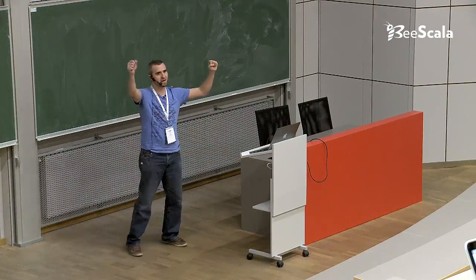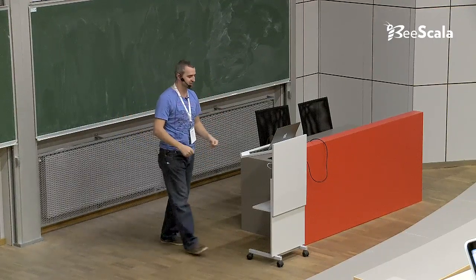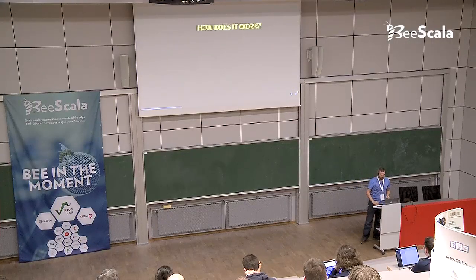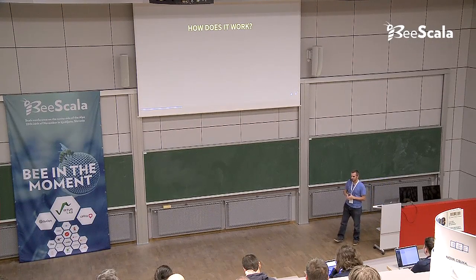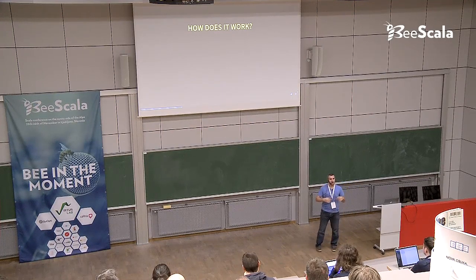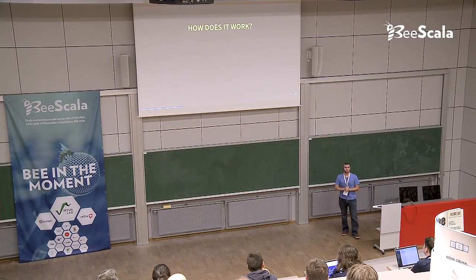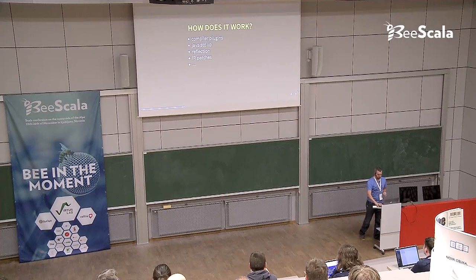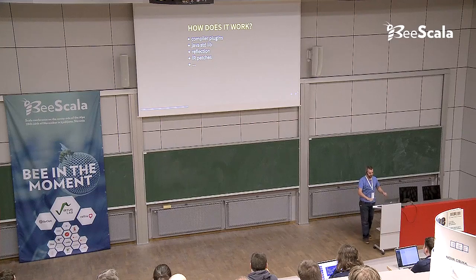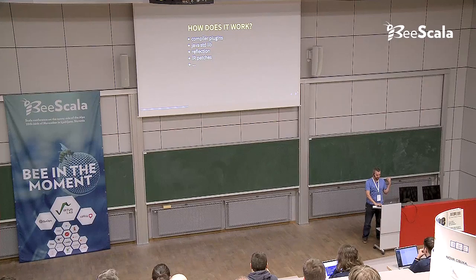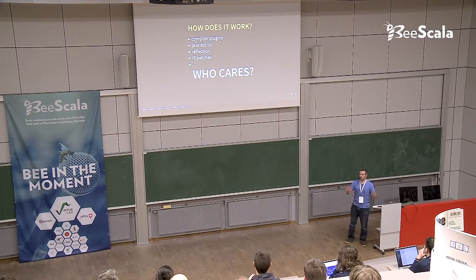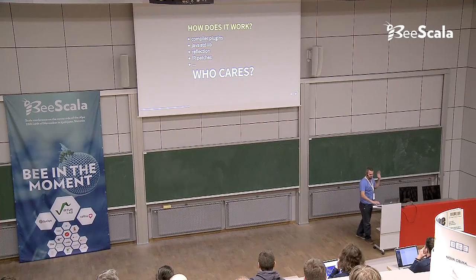We take Akka code and compile it with Scala.js and see what happens altogether. How does it work? This is the part of the talk where I usually start to talk about how we did Akka.js — our compiler plugin, Java standard library, reflection on JavaScript (which is madness), intermediate representation plugin patchers, and so on. But believe me, don't care about it. It works, and it is already done.